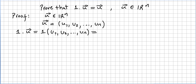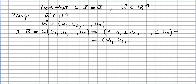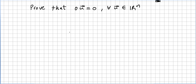So 1 times u1 is u1, 1 times u2 is u2, and 1 times u_n is u_n. And this is nothing else but vector u. So 1 times u equals u, and that concludes the proof.